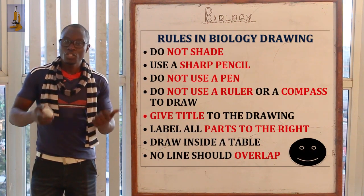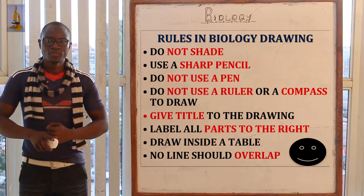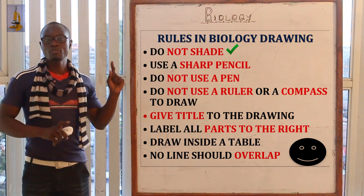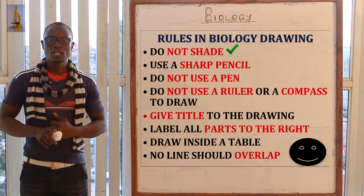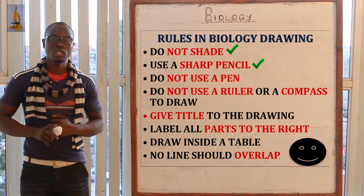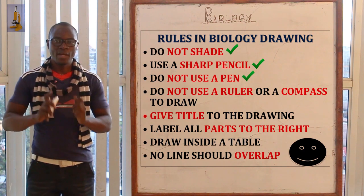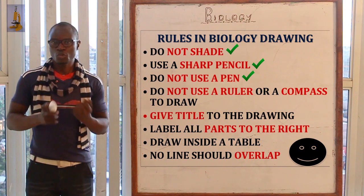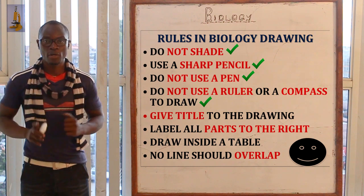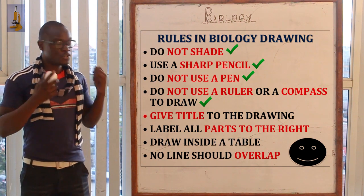Now let's look at the rules for biological drawings. First, you should never shade your diagram. Second, you should only use a very sharp pencil — never use a dull pencil or a pen. Third, never use a ruler or compass to draw in biology — all diagrams should be drawn freehand.